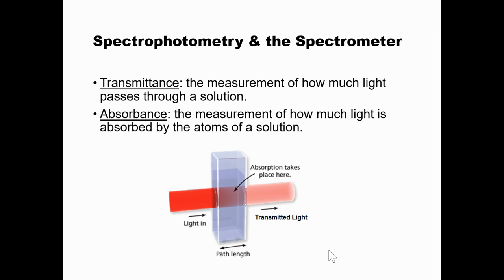Here are two important definitions you're going to be hearing a lot, so make sure you understand these. Transmittance is the measurement of how much light passes through a solution. Absorbance is the measurement of how much light is absorbed by the atoms of a solution. This little rectangular prism you're seeing here is actually a container—think of it like a test tube, except it is a test cube.